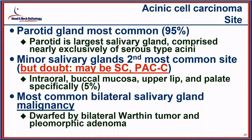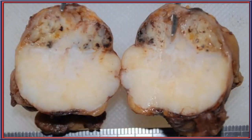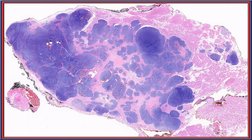The parotid gland accounts for 95% of acinic cell carcinomas because that is where the most serous acini are identified. Minor salivary gland occurrence has been doubted since secretory carcinoma and cribriform adenocarcinoma were introduced — those tumors are now classified differently. It is the most common malignancy to be bilateral, though Warthin tumor and pleomorphic adenoma are far more commonly bilateral. The cut surface usually has a fish-flesh appearance, frequently associated with a tumor-associated lymphoid proliferation.